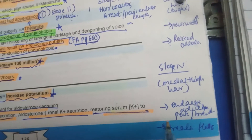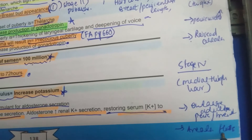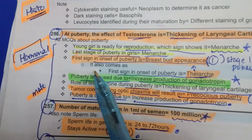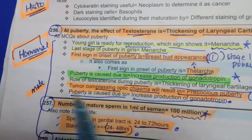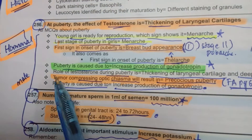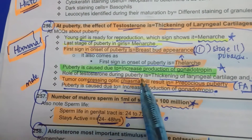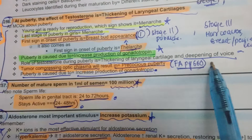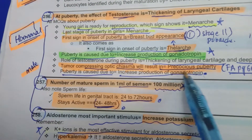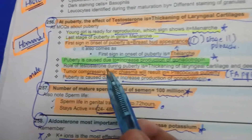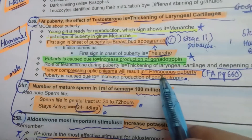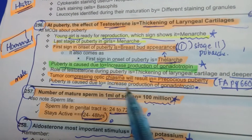Continuing puberty stages: stage four includes raised areola and increased pelvic/penile size; stage five shows pubic hair on medial thigh, adult penis, flat areola, and normal breast mound. Puberty is caused by increased production of gonadotropins. A tumor compressing the optic chiasm can result in precocious puberty and also causes bitemporal hemianopia — central causes lead to precocious puberty.